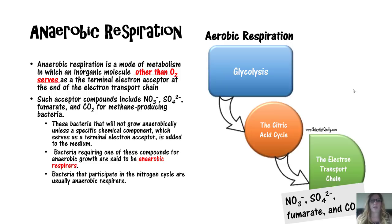Anaerobic respiration uses an inorganic molecule other than oxygen as the terminal electron acceptor at the end of the electron transport chain. Such acceptor compounds include nitrite, sulfate, fumarate, and carbon dioxide for the methane-producing bacteria. These bacteria will not grow anaerobically unless a specific chemical component serving as the terminal electron acceptor is added to the medium. Bacteria requiring these compounds for anaerobic growth are said to be anaerobic respirers. Bacteria that participate in the nitrogen cycle are usually anaerobic respirers.